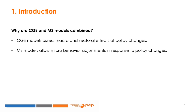Why are CGE and MS models combined? There's a growing interest in combining Computable General Equilibrium CGE models and Microsimulation MS models in assessing the effectiveness of pro-poor macroeconomic policy. CGE models capture macro and sectoral effects of policy changes, and are based on consistent national accounts data which captures the interrelation among institutional sectors and industries. MS models allow individuals and real households to adjust their behaviour in response to policy shocks, and require micro-level data to perform distributive and poverty analysis at the individual level.